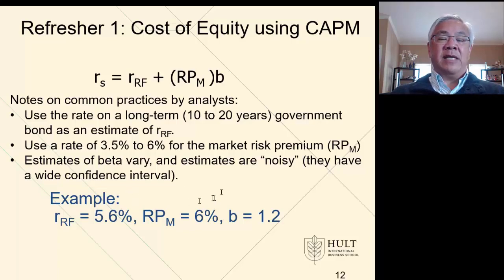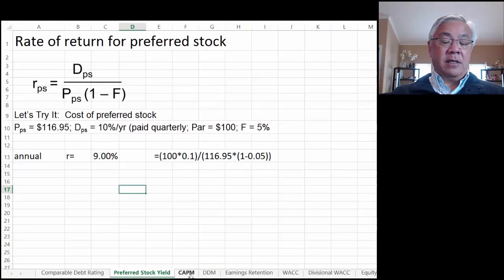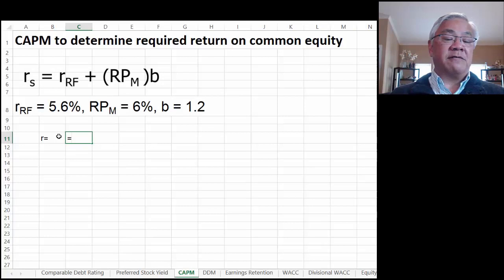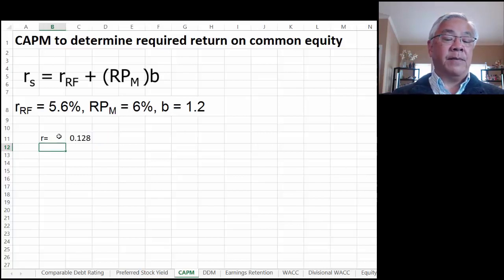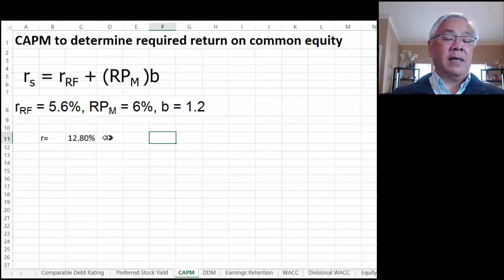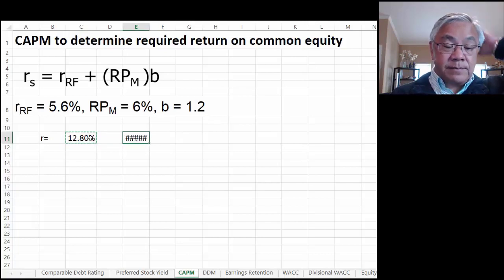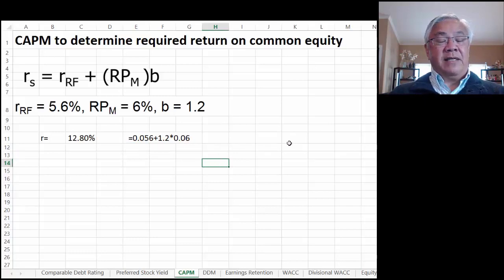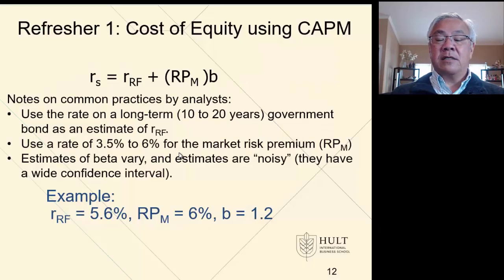Here's an example. We'll hop into Excel — go to the CAPM tab. R equals the risk-free rate, which is 0.056, plus beta of 1.2 times 0.06 as the market risk premium. That gives us 12.8%. Let's format that properly and copy it so we can see it more easily. So that's method one.